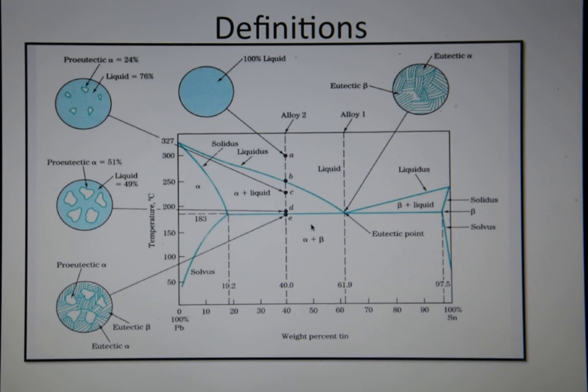This line here is called the eutectic line. These two lines down here are called the solvus lines which separate the single phase solid solutions from the alpha and beta phase.